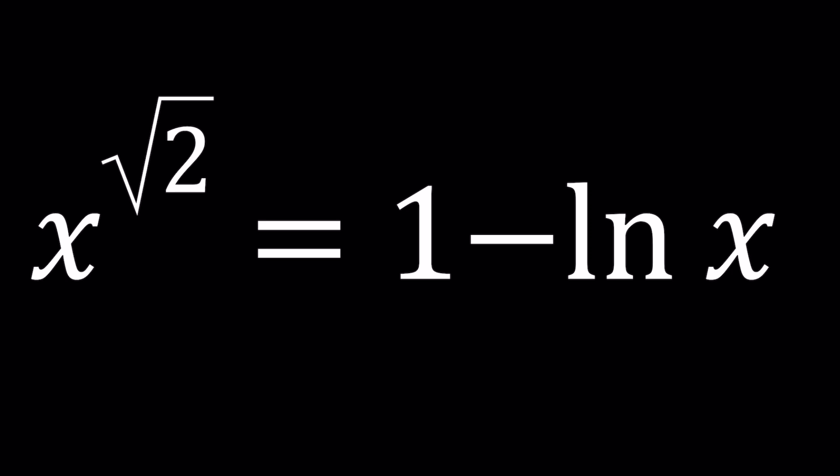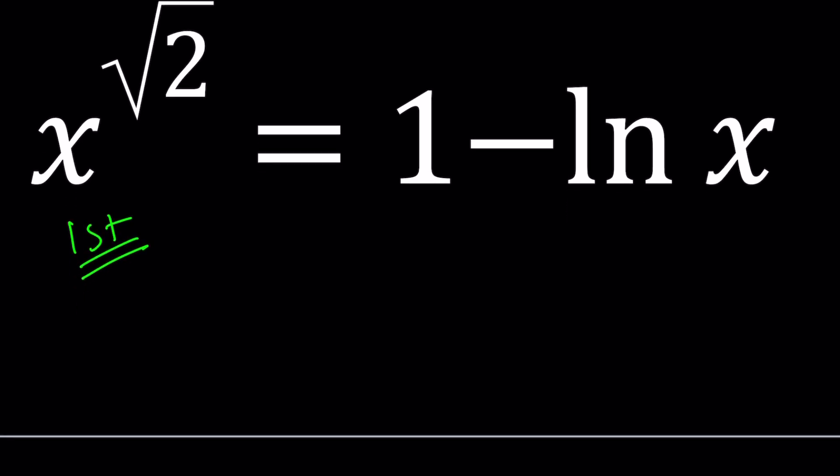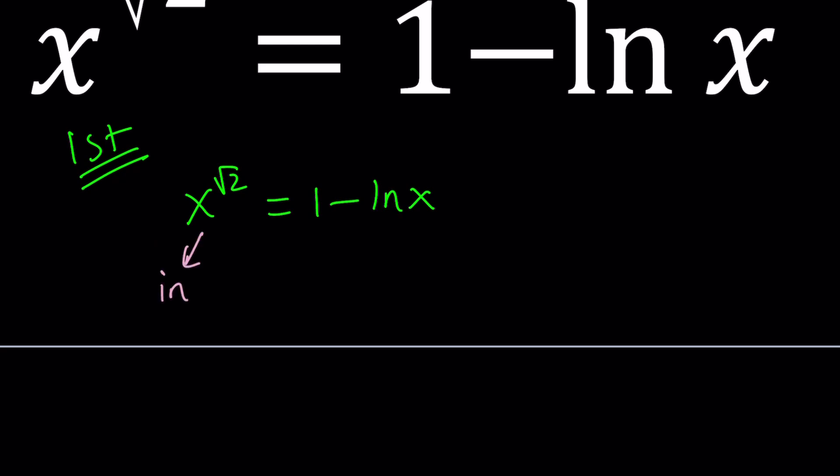So we're going to be using something pretty interesting. First method. Obviously, for a problem like this, you can do guess and check, right? I mean, that doesn't guarantee you found all the solutions, but at least that gives us a solution. Now, first of all, notice that x to the power square root of 2 is an increasing function. And then 1 minus ln x, ln x is increasing, but 1 minus ln x is going to be a decreasing function.